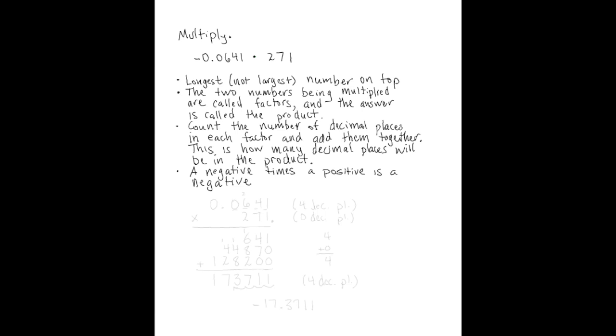When you multiply, the two numbers being multiplied are called factors, and the answer is called the product. The thing that makes this interesting using decimals is that you need to count the number of decimal places in each factor and add them together. This is how many decimal places will be in the product. For this problem, remember that a negative times a positive is a negative.